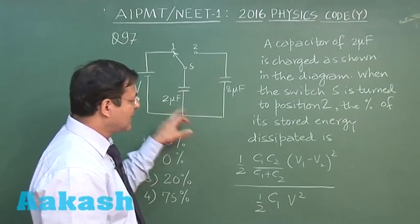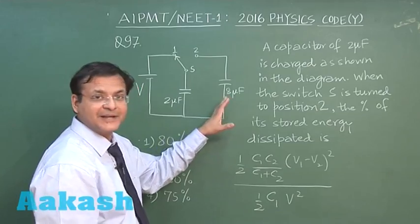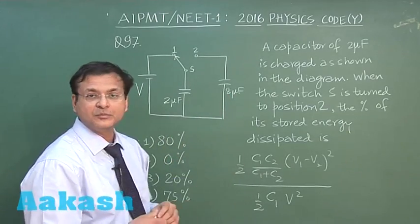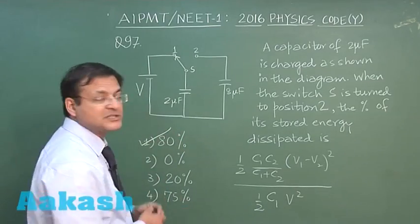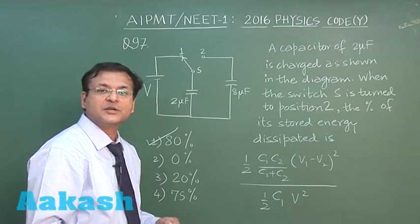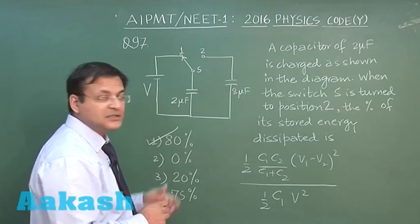So for C1 if you substitute 2 and for C2 if you substitute 8, directly you will be getting the value 0.8. So 80 percent loss. That will be the correct answer for question 97. Now let us look at next question, question 98.